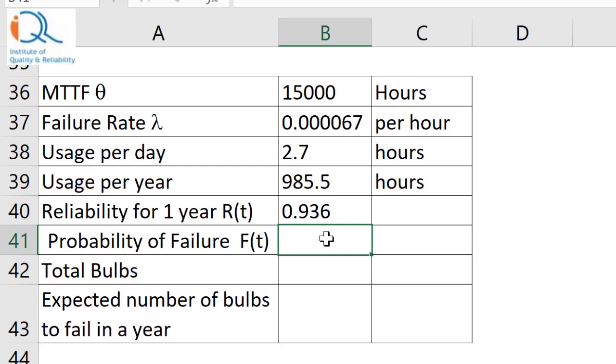Probability of failure F of T would be 1 minus reliability that is 0.064. Total number of bulbs is 300. Therefore, expected number of bulbs to fail in a year would be equal to 300 into probability of failure 0.064 that is about 19.